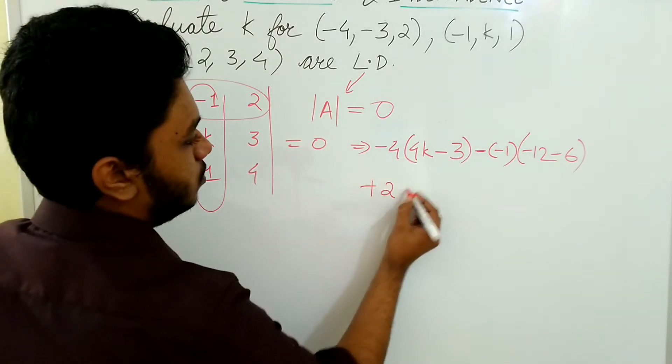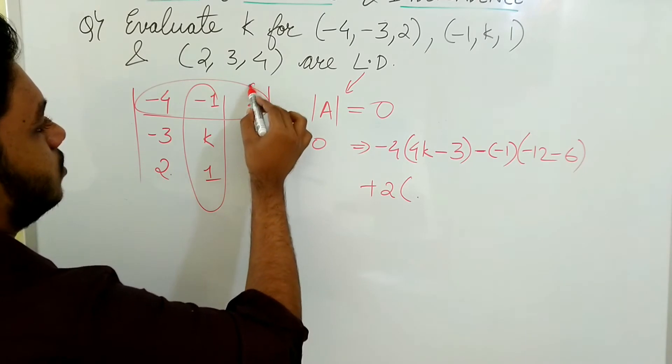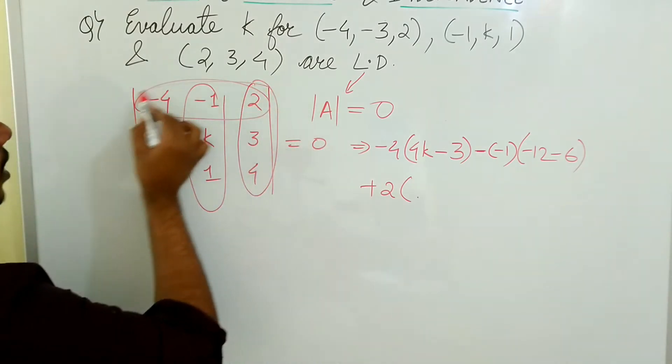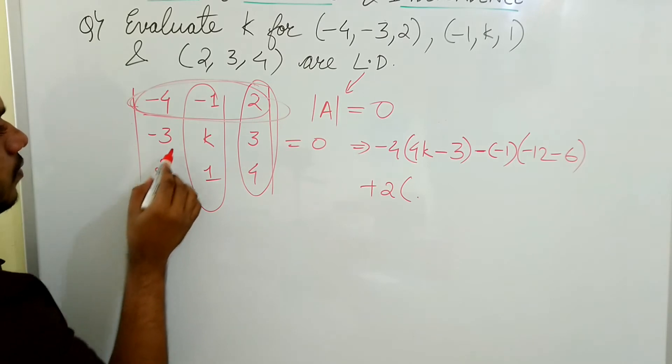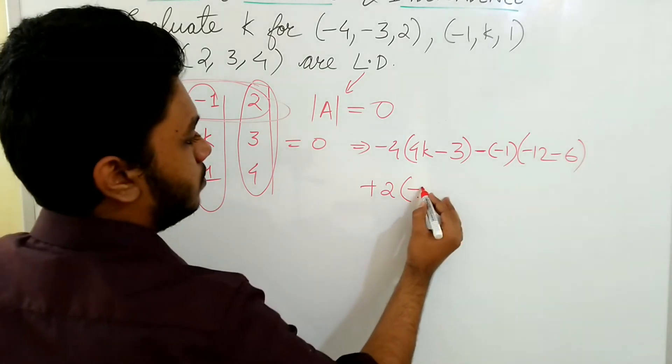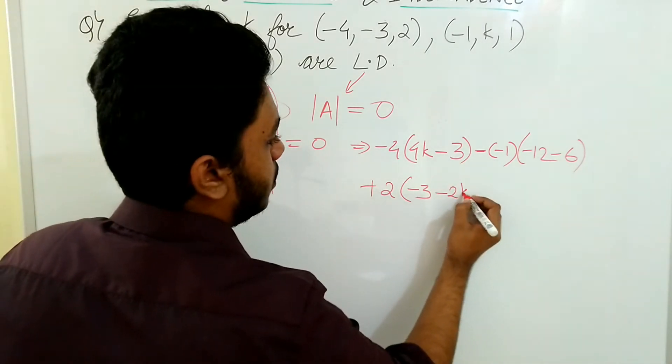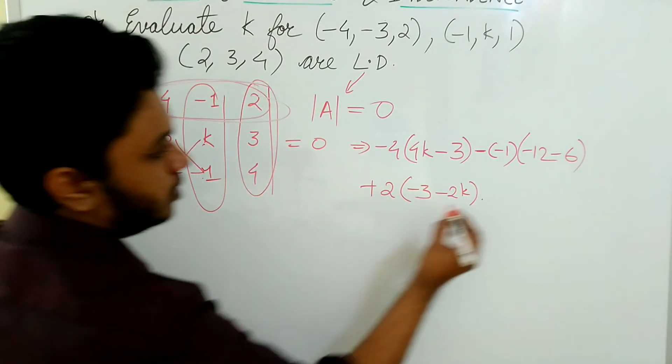Last row: plus 2 into... I need to cancel out this row and this column. So I will be left out with -3, 2k, minus 2. Which is equal to 0.